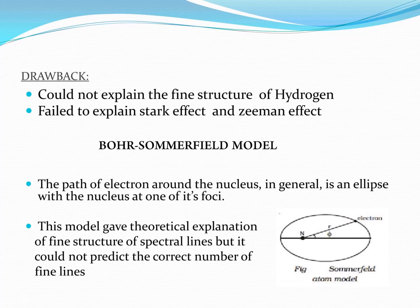Because of these drawbacks, the Bohr-Sommerfield model is used. In the Bohr-Sommerfield model, electrons revolve in an elliptical orbit with the nucleus at one of its foci, unlike the Bohr model where electrons revolve in a circular orbit. However, this model could not explain the correct number of spectral lines or their intensities.